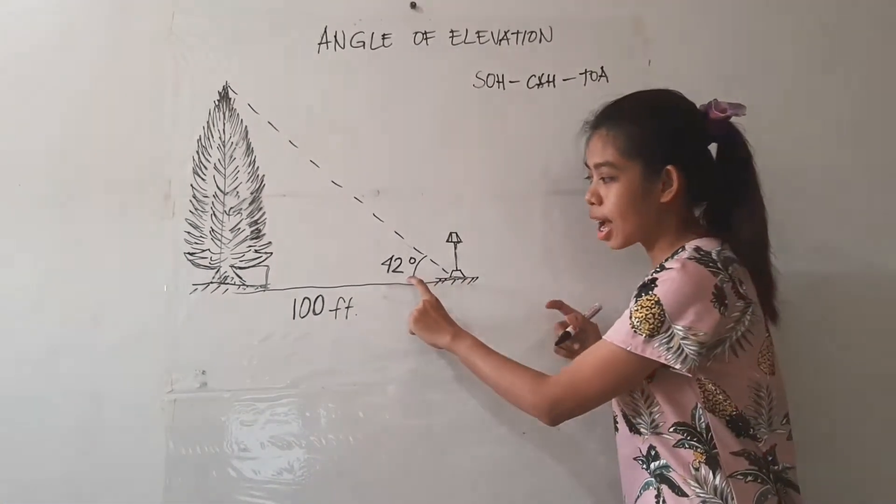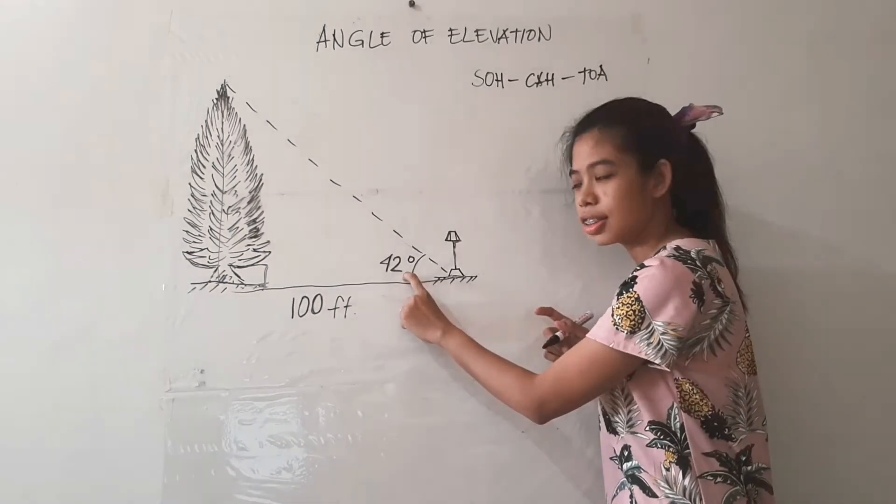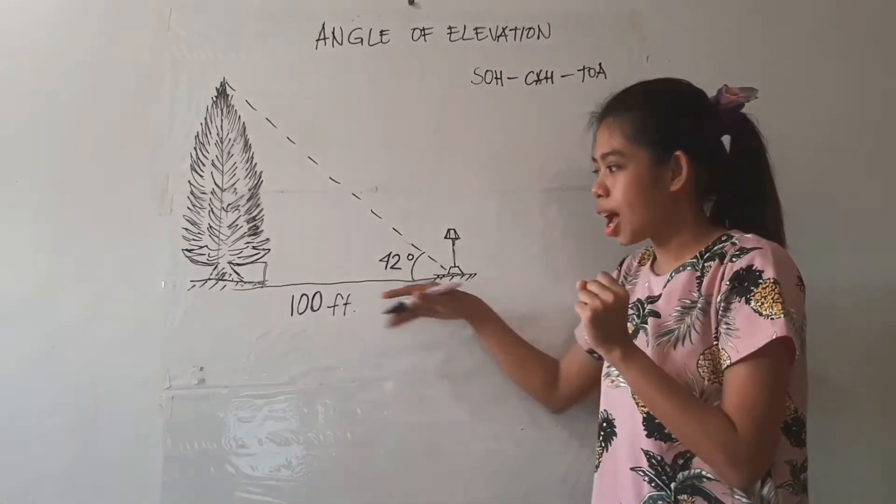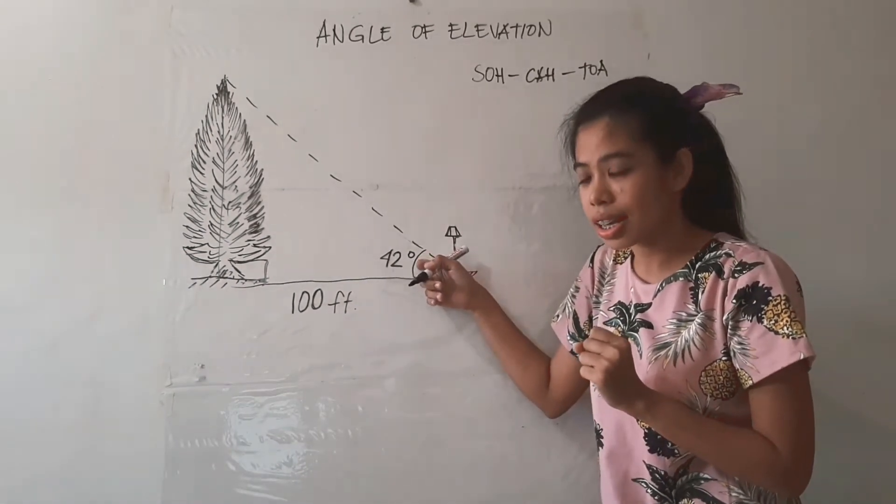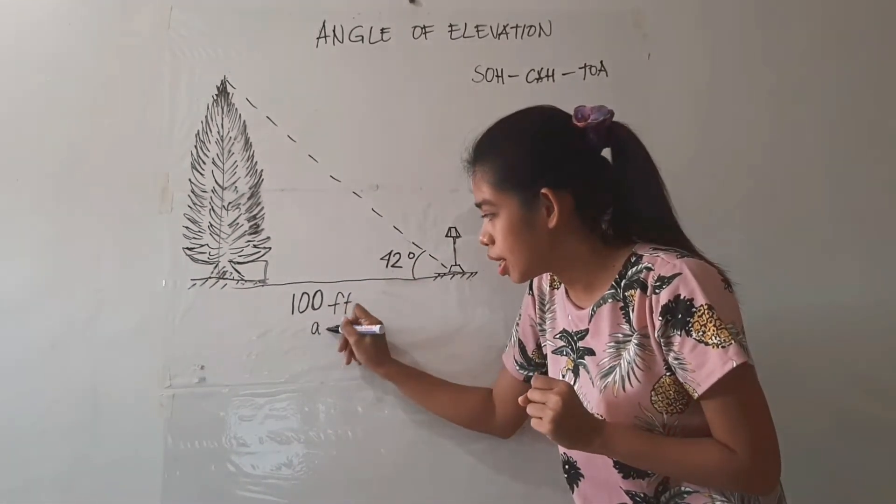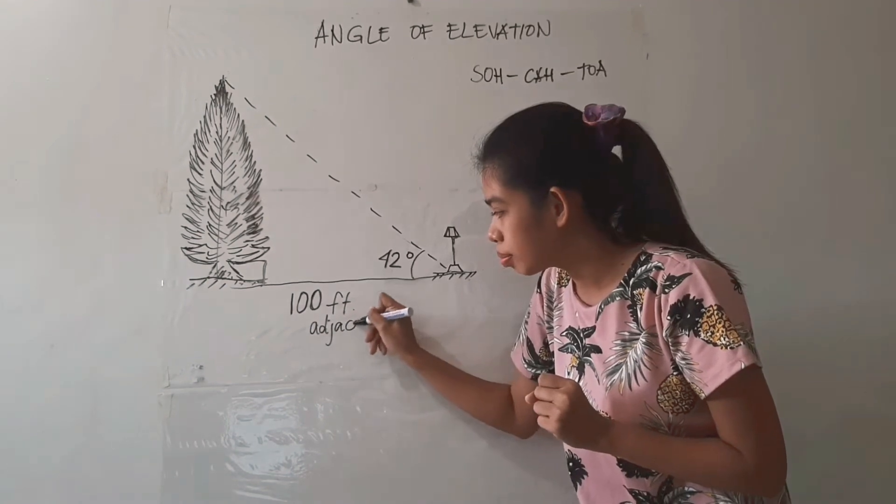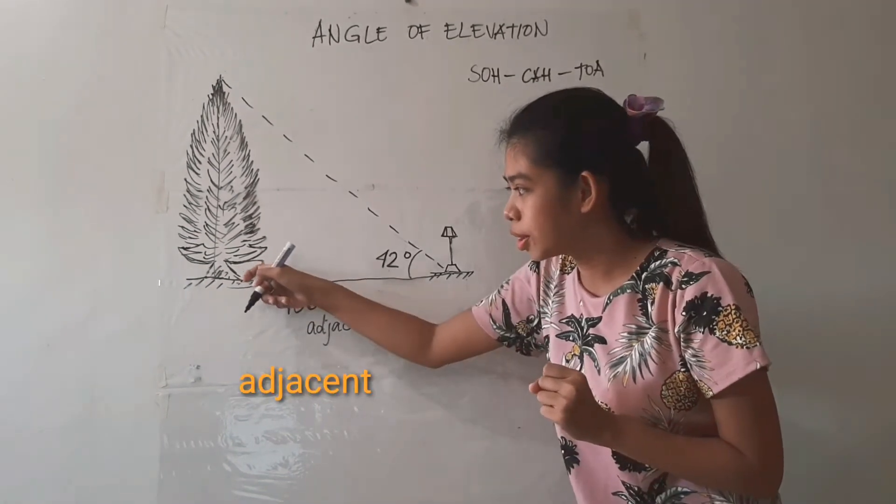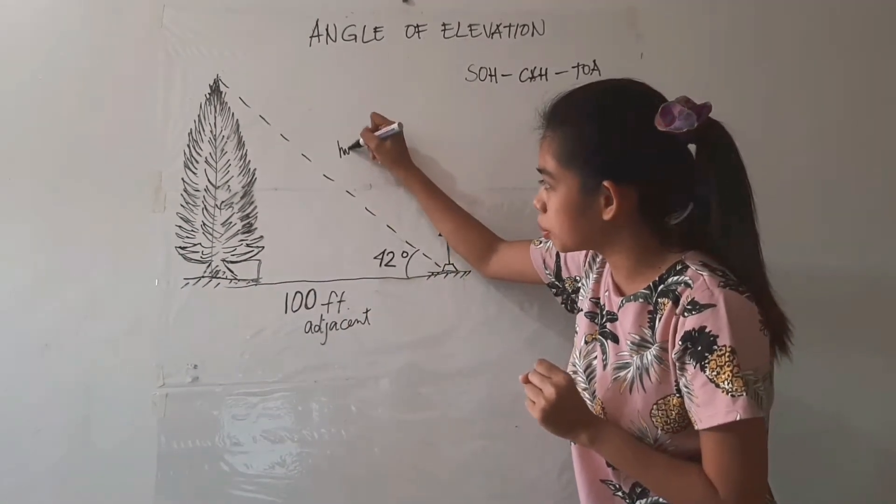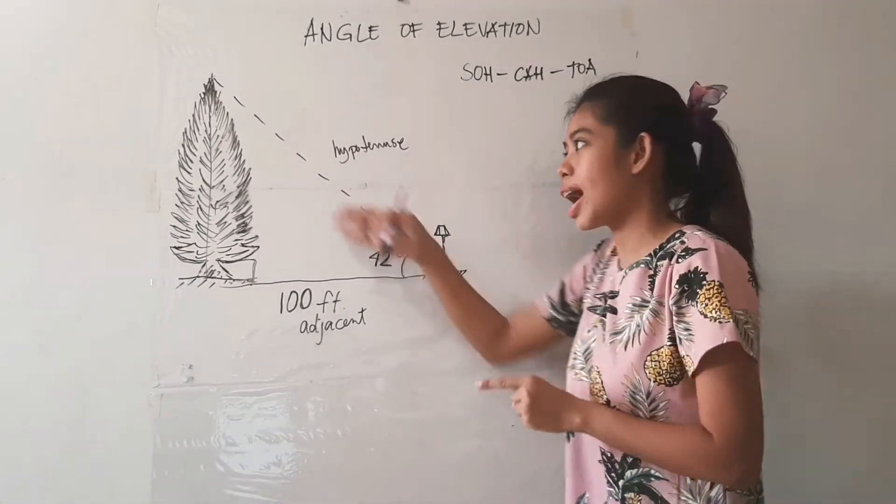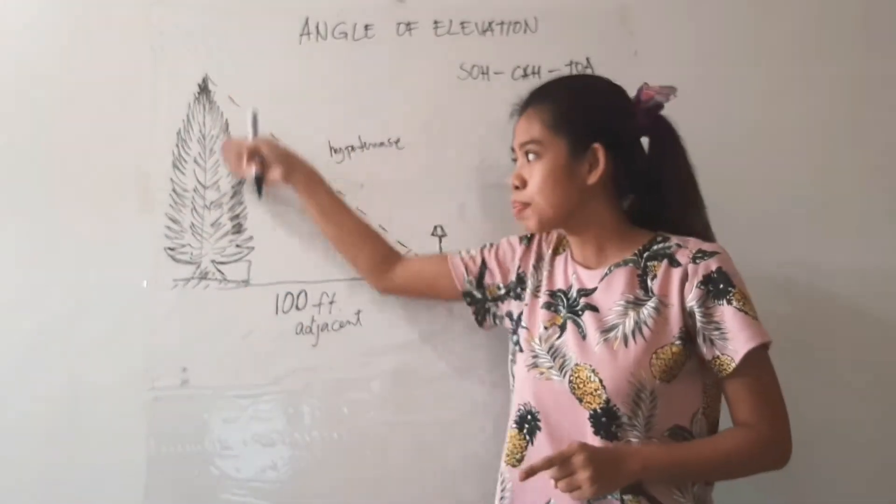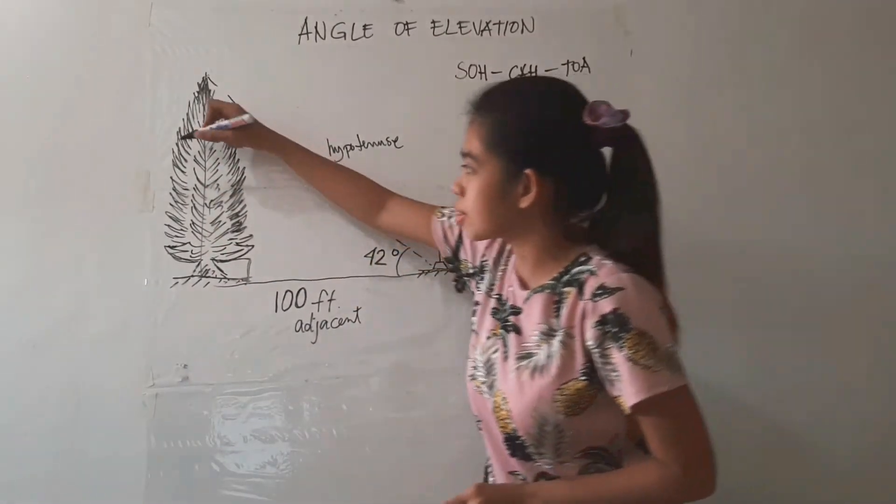So how? Since we already have here the angle theta, the angle of elevation, 42 degrees, we have this at this times 100 feet, we can say that since this is the angle theta, this would be the adjacent side. Opposite to right angle is the hypotenuse. And what are we looking for? We are looking for the height of the tree, and it happened to be the opposite side.